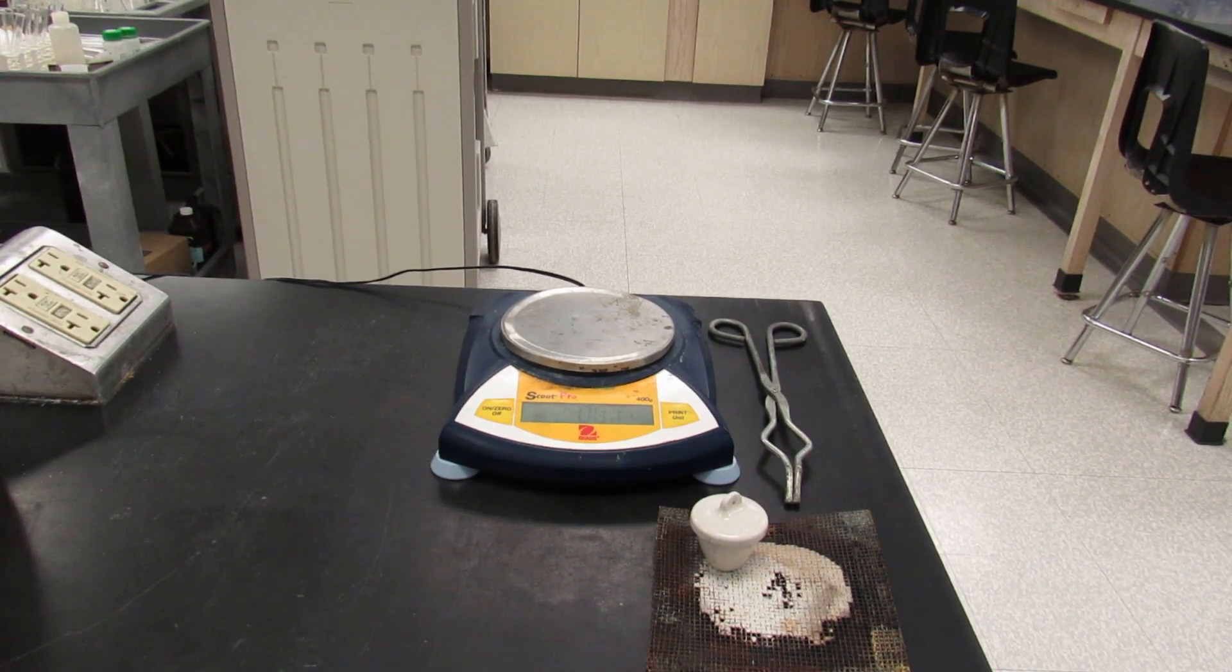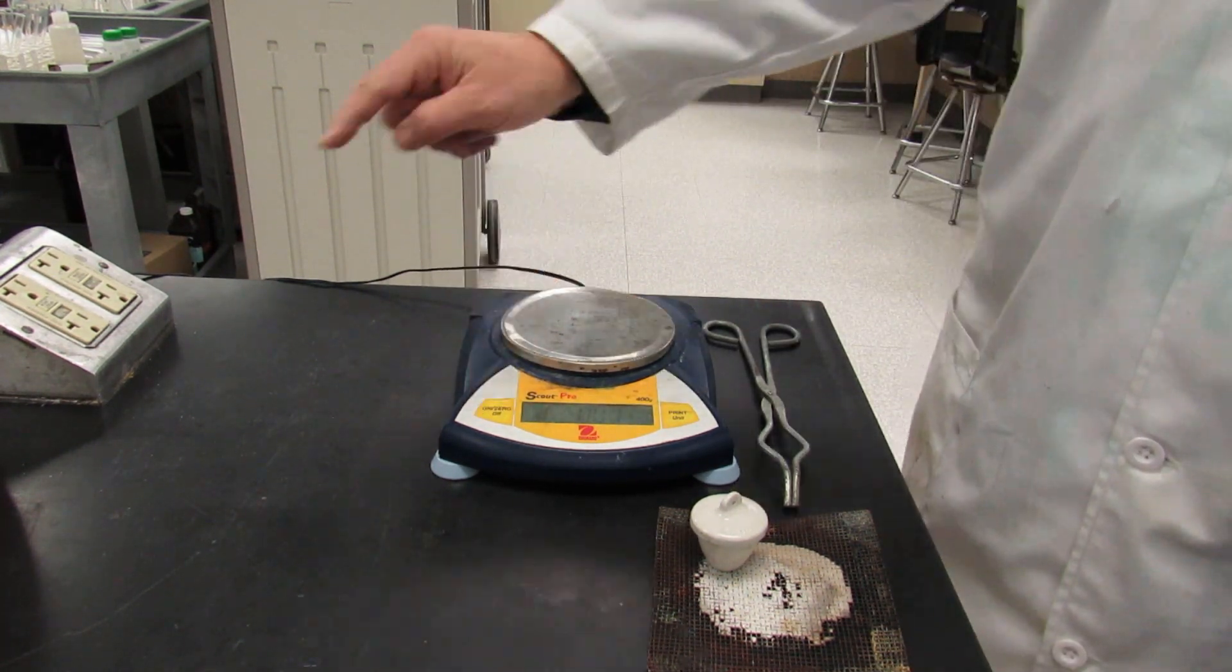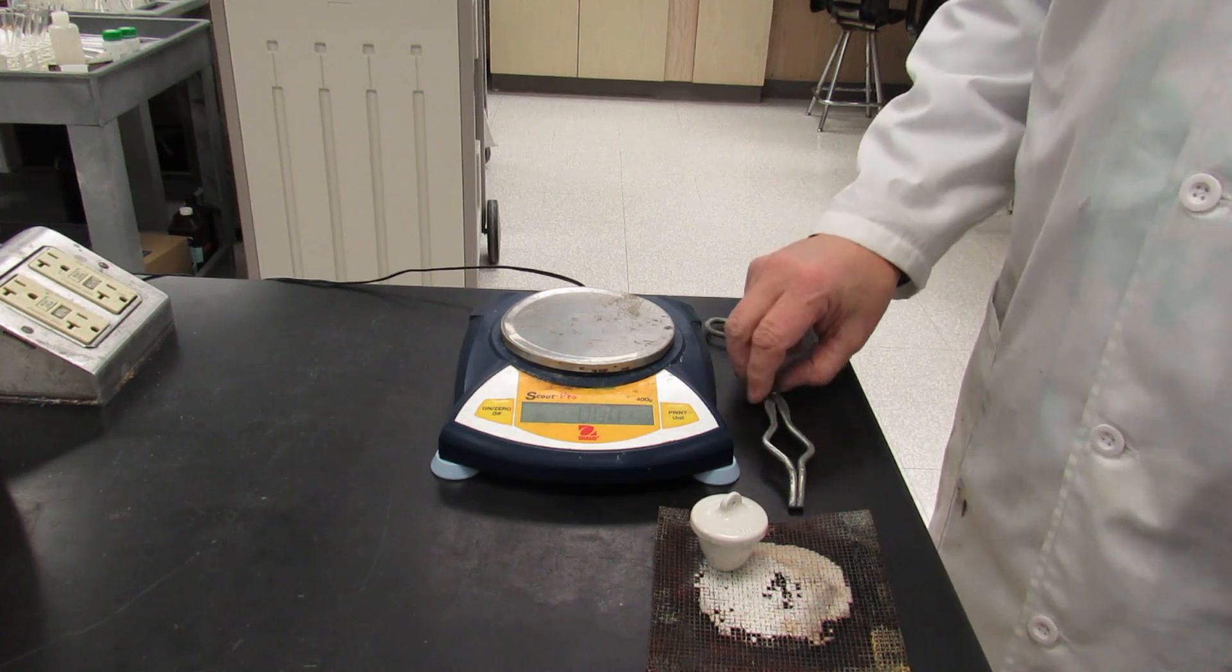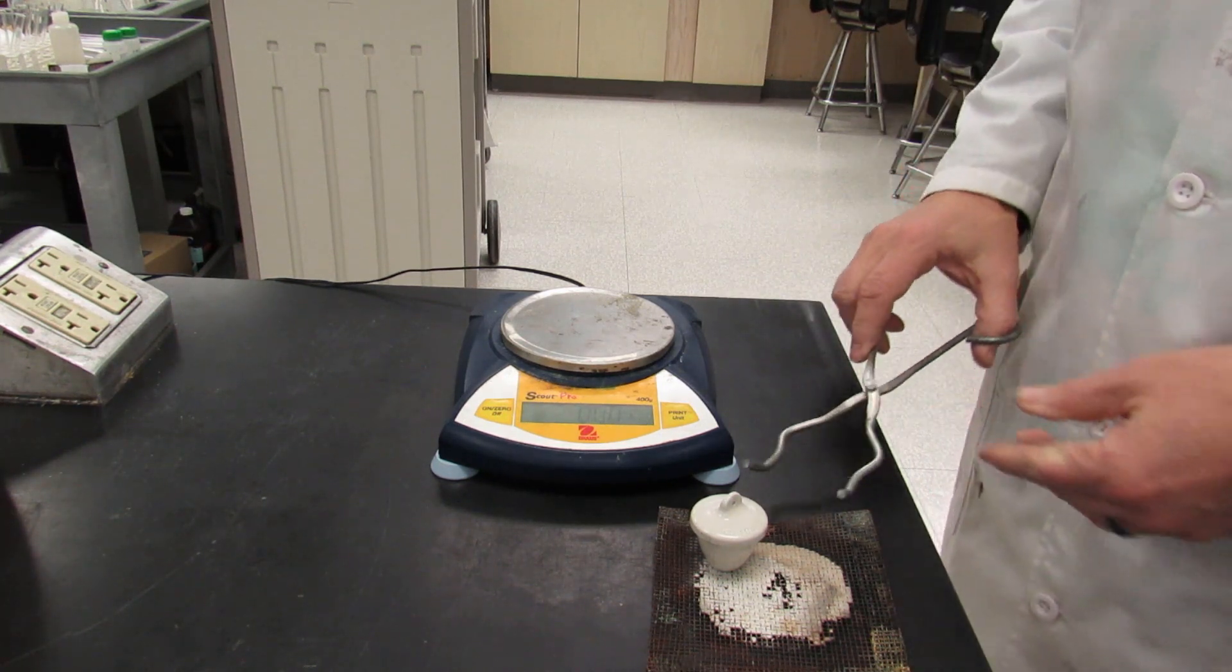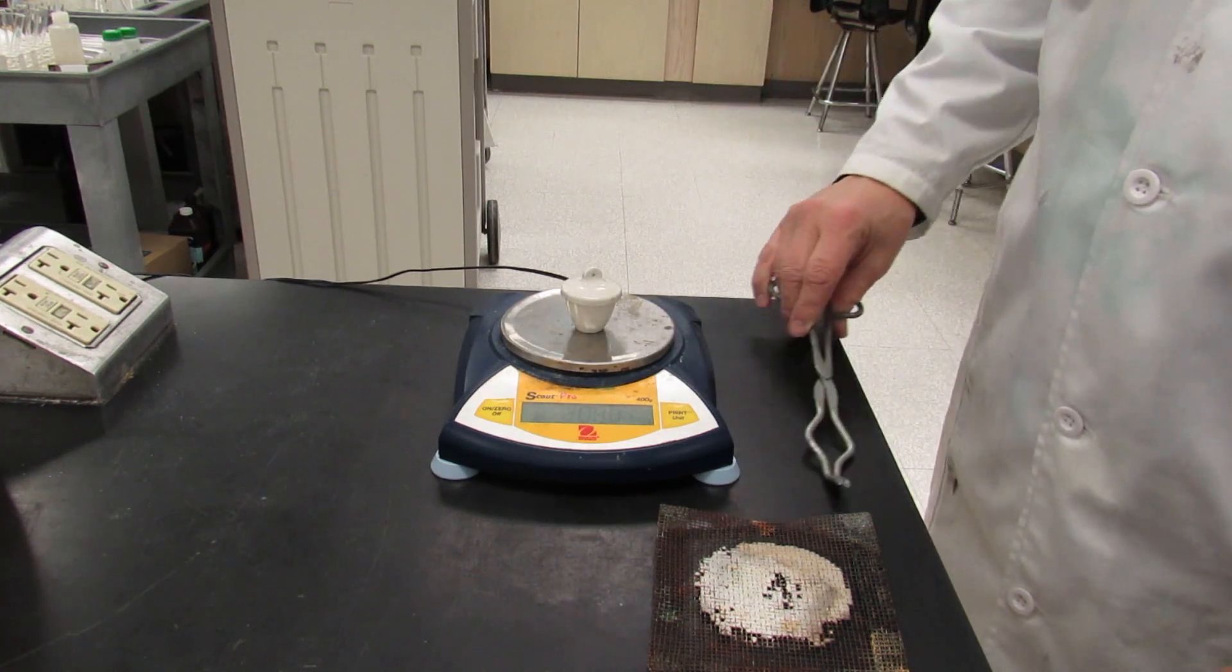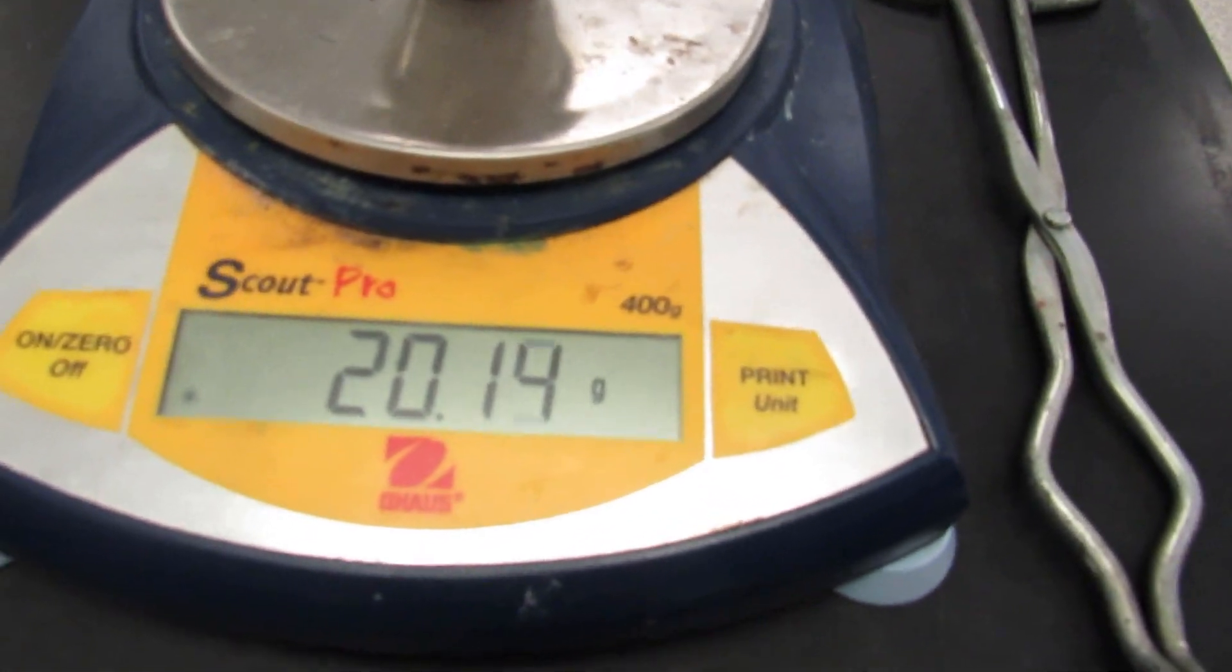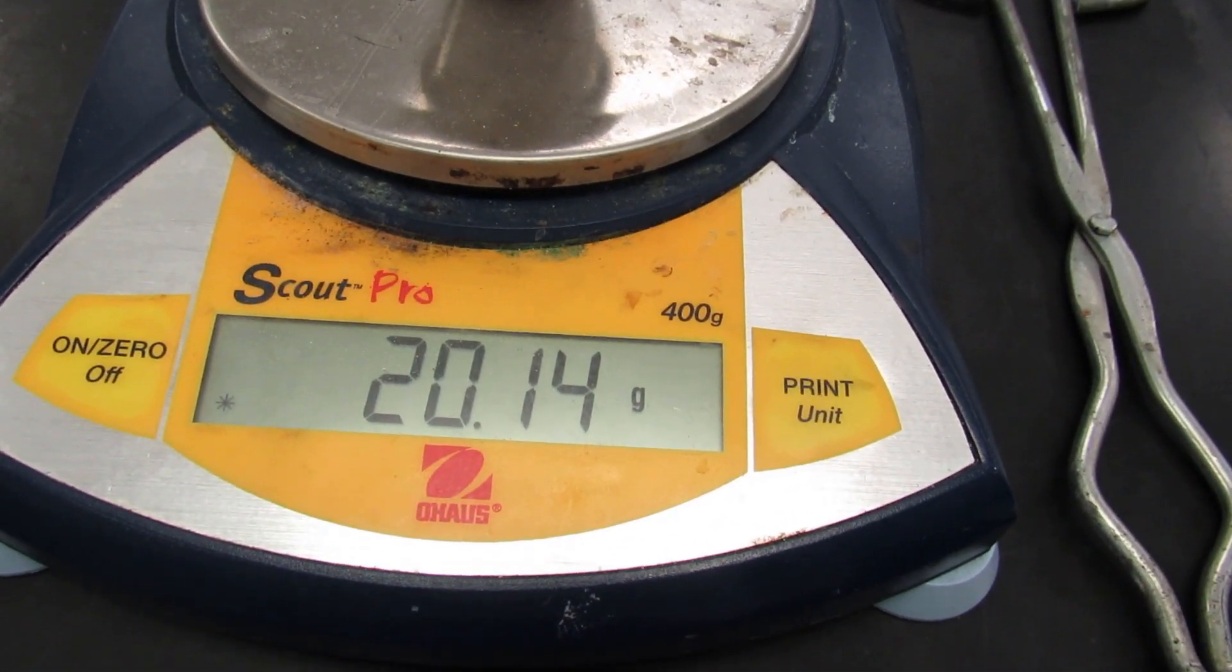After it's completely dried, you're going to go ahead and mass the crucible, the empty crucible. Zero the balance. Use your crucible tongs to lift up the crucible and place it onto the balance. The crucible and the cover has a mass of 10.14 grams.